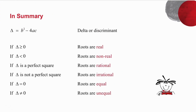What is under the square root is b squared minus 4ac, which we call delta, or the discriminant, represented by a triangle. If delta is greater than or equal to 0, the roots will be real. If delta is negative, the roots will be non-real. If delta is a perfect square, the roots will be rational. If delta is not a perfect square, the roots are irrational. If delta equals 0, the roots are equal. If delta is not equal to 0, the roots are unequal.